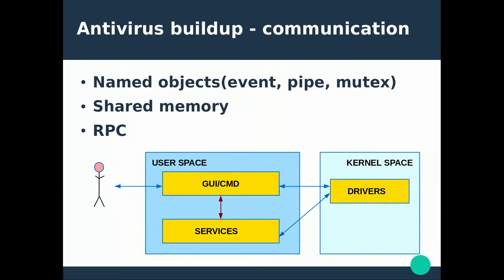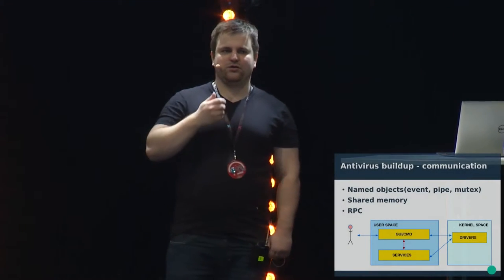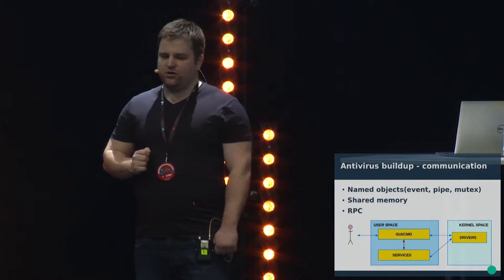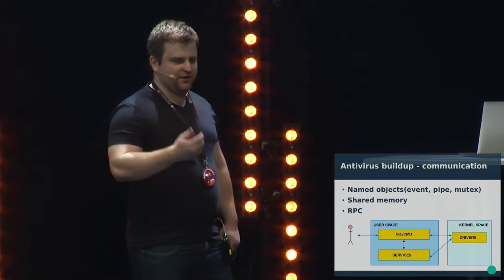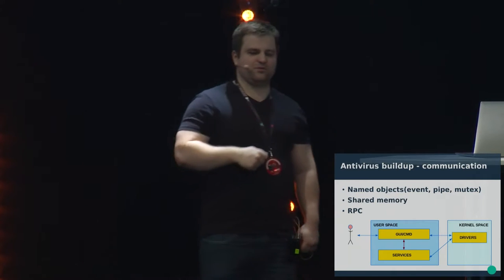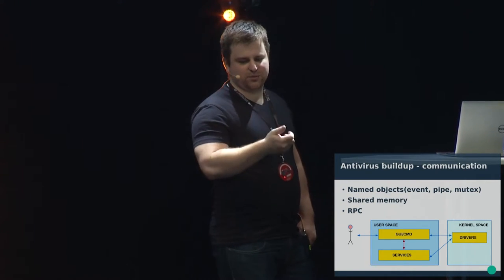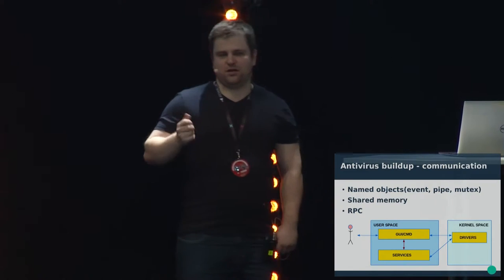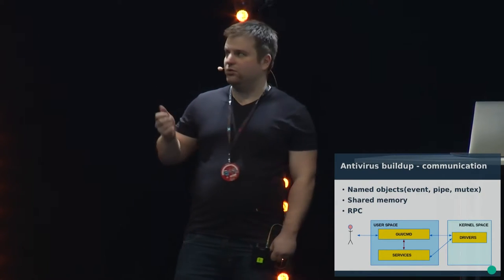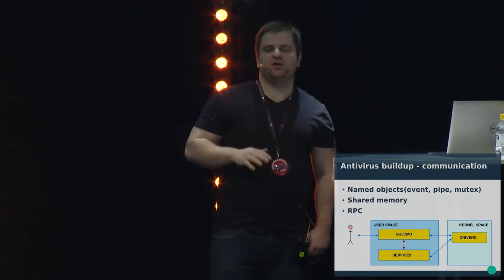Now we move to a little more interesting part — how different antivirus processes talk with each other. If you click some button in the graphical user interface, then the service that actually does the real things like scanning has to be informed. This kind of information moving between processes is done through different means. Really commonly used are named objects that Windows provides — like events, pipes, and mutexes. There's also shared memory, and RPC — remote process calls — which are Windows ways for inter-process communication.